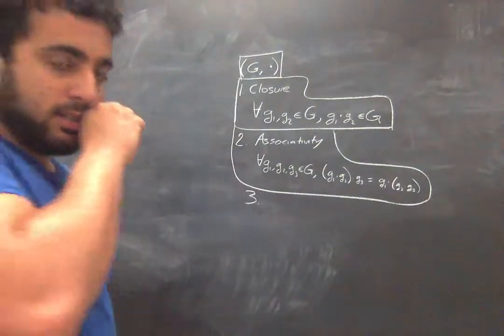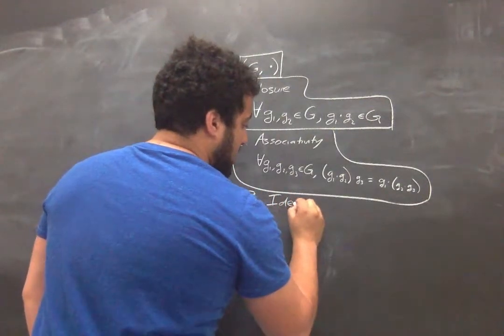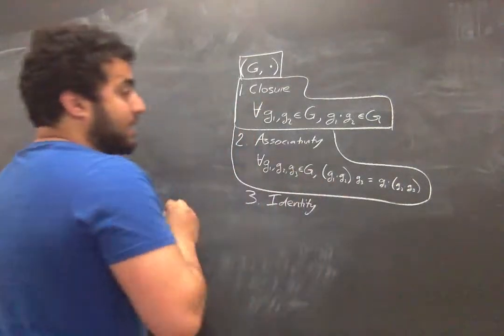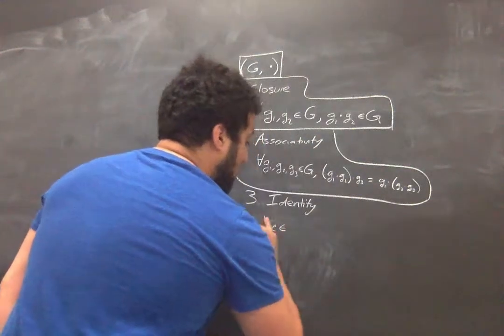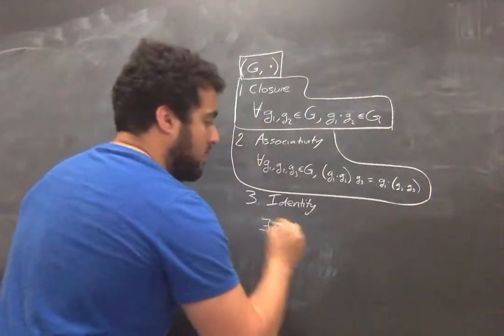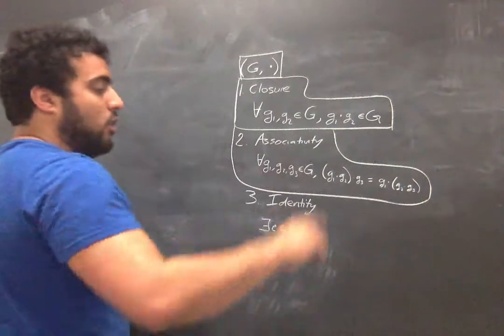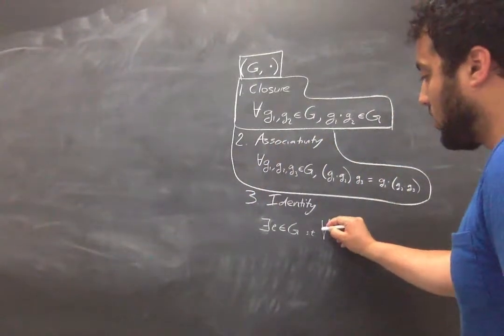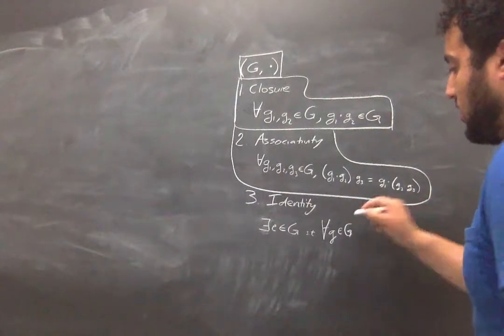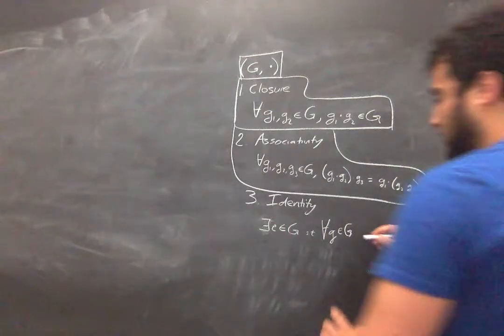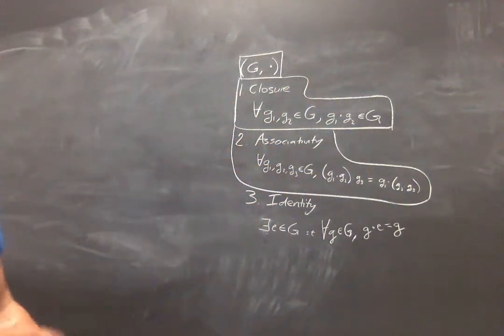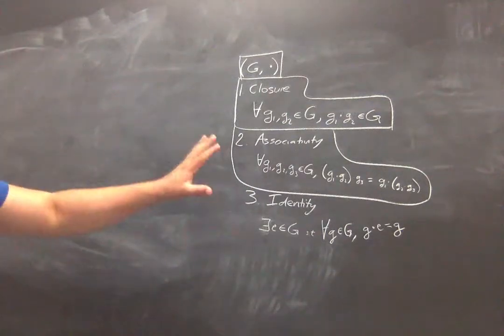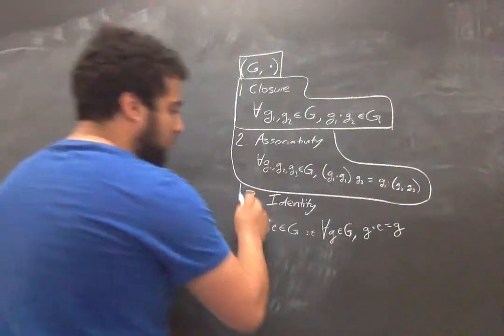Number three is the existence of an identity. Our group contains an element which we're going to call E. What we want to say is that there exists an element E in our group such that for all other elements of our group — for all little g in big G — if we multiply G by E, we get back G. So essentially, there's some element of our group that keeps everything the same under this operation; it just holds everything fixed.